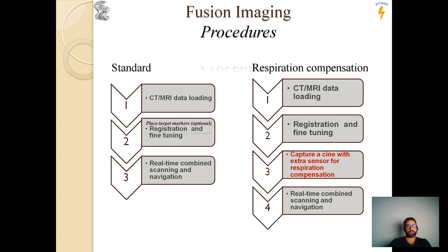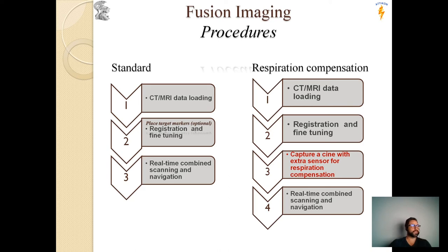Many times we have respiratory movement artifacts. In these cases, we can use the respiratory compensation sensor. To perform the compensation, you just need to set a signal loop with an extra respiration sensor. Based on the signal loop, the system can build up a 3D model of movement, and finally integrate the model for respiratory compensation.